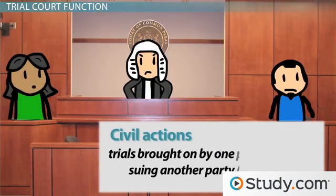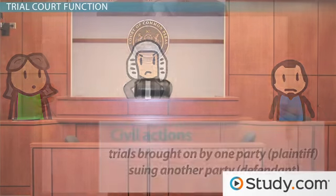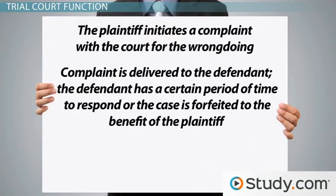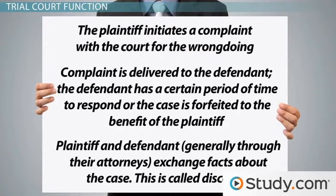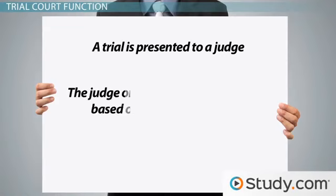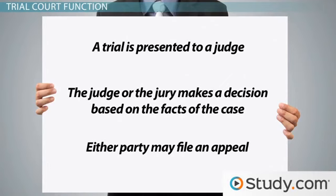Civil actions are trials brought on by one party, the plaintiff, suing another party, the defendant. Civil trials work a little differently. When a plaintiff brings about a civil lawsuit, the process is as follows: the plaintiff initiates a complaint with the court for wrongdoing; the complaint is delivered to the defendant, who has a certain period of time to respond or the case is forfeited to the benefit of the plaintiff; the plaintiff and defendant, generally through their attorneys, exchange facts about the case — this is called discovery; a trial is presented to a judge; the judge or jury makes a decision based on the facts of the case; and either party may file an appeal.